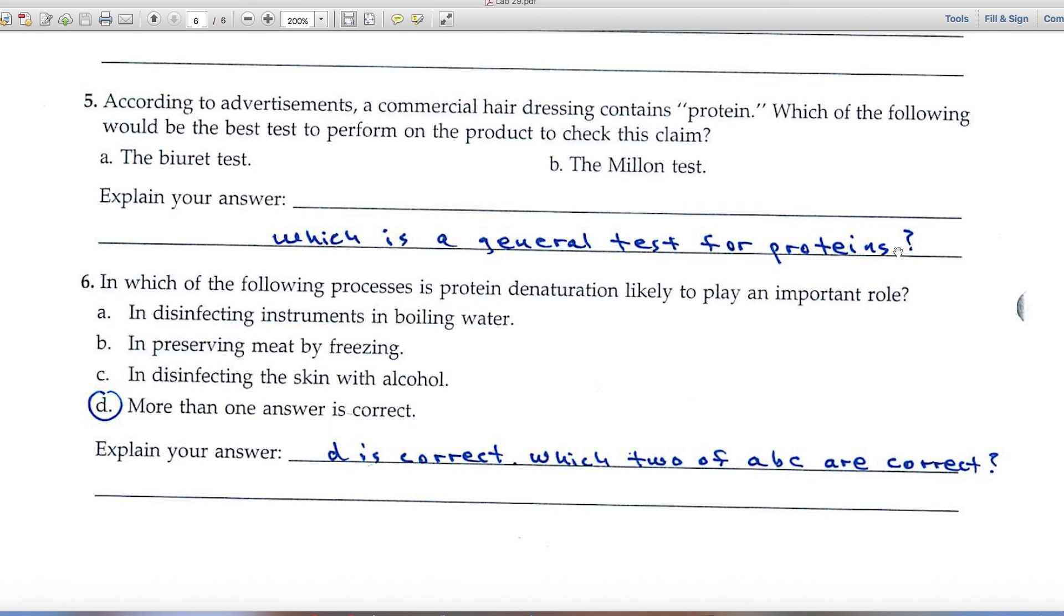And finally, number six, again, a big tip. The correct answer is D, more than one answer is correct. And that means A, B and C are either all correct or two of those are correct. And I'd like you to identify which two of those are also correct.